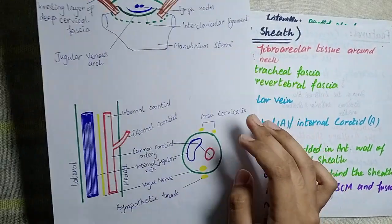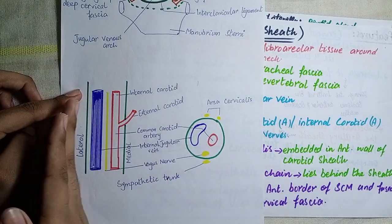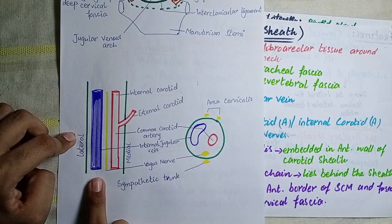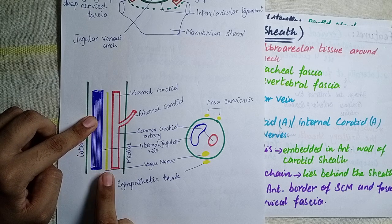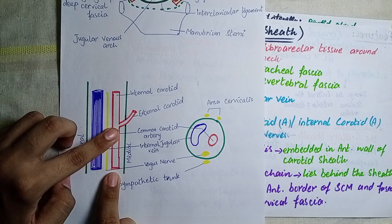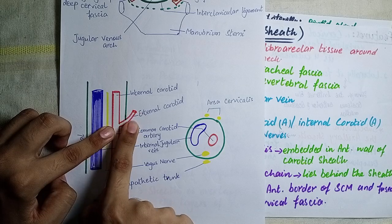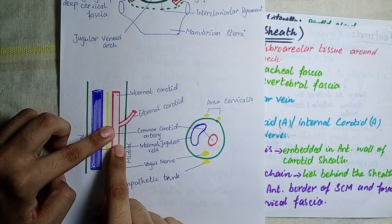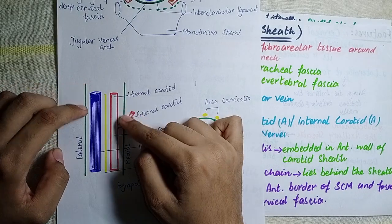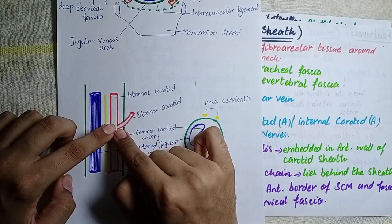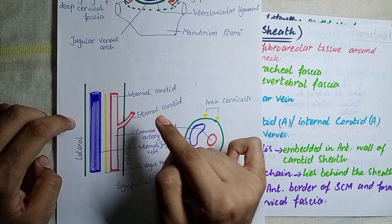Looking at this diagram, this is the medial side and this is the lateral side. Laterally, the internal jugular vein is present, and medially is the common carotid artery. We can also see the external carotid artery. The external carotid artery pierces the carotid sheath from the outside — the fascia is pierced by the external carotid artery, which is not a content of the carotid sheath.